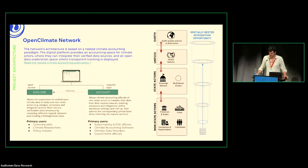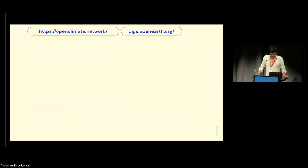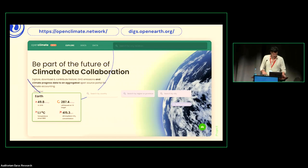Based on this we built the Open Climate Network. We have three or four levels: non-state actors, state actors, the UN, and the Earth — all nested. The platform has two main verticals: first, Explore, which is exploring the different emissions data sets, harmonizing them in the same data schema so they can be interpretable and comparable; and second, an Account part that helps cities build their own emissions reports.